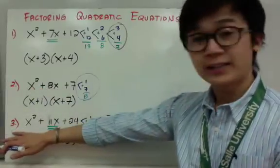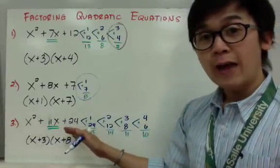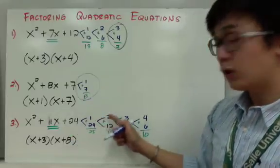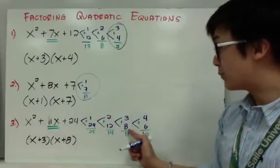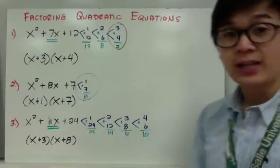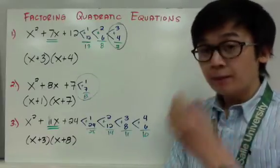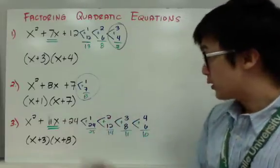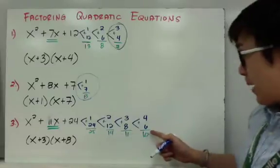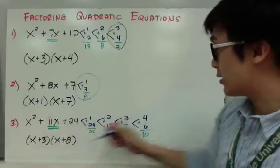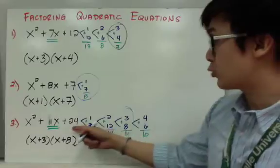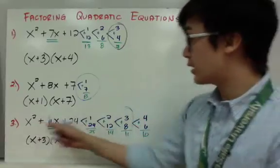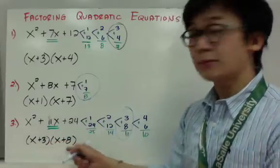For the third example, I have x squared plus 11x plus 24. I'm going to list down all the possible factors for 24. I have 1 times 24, 2 times 12, 3 times 8, 4 times 6. You cannot miss any of the factors because you might not get to the correct answer. In this case, the pairings that gives me 11 as a sum is 3 and 8. 3 plus 8 is 11, so my factor is x plus 3 times x plus 8.